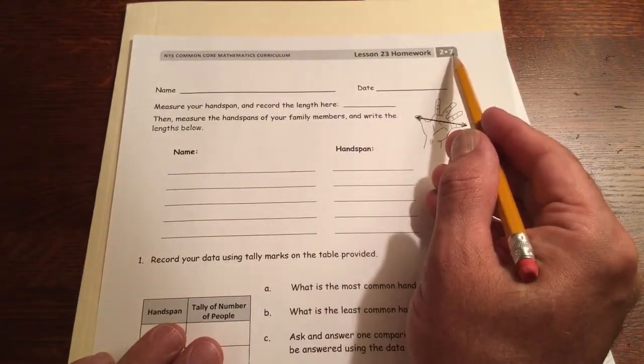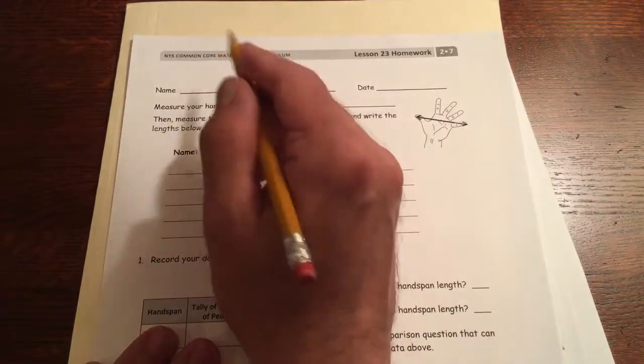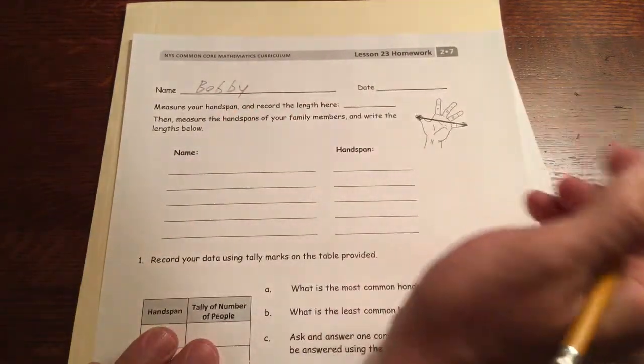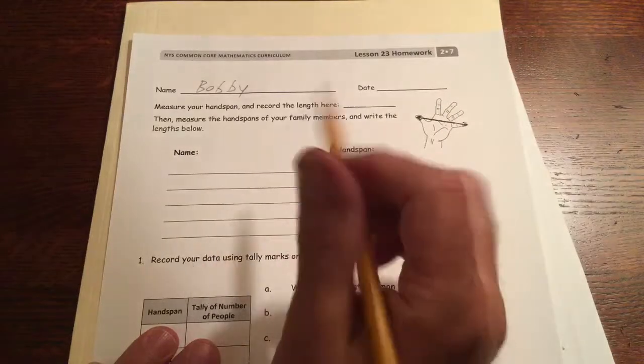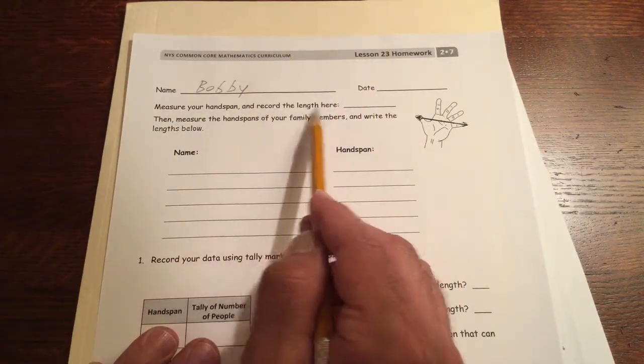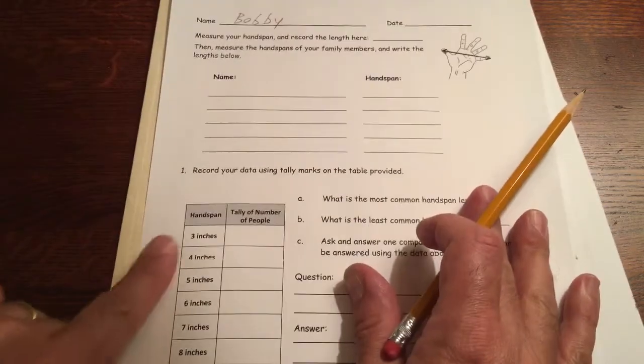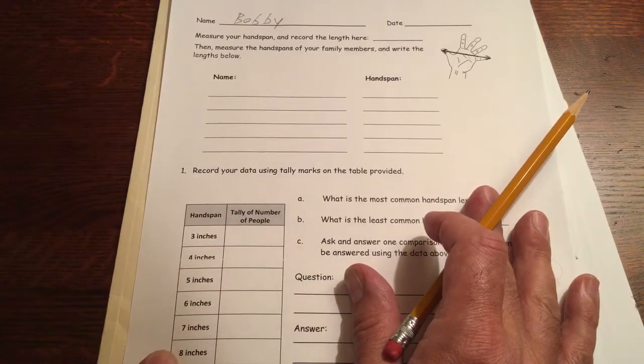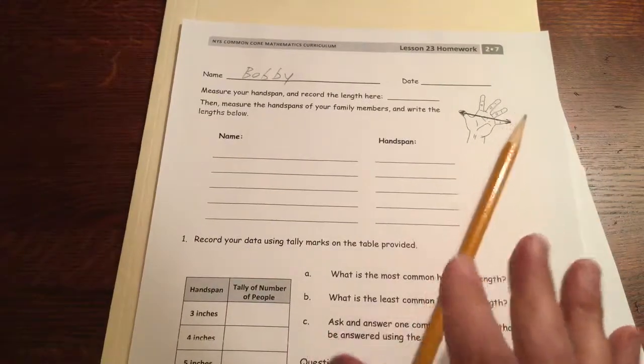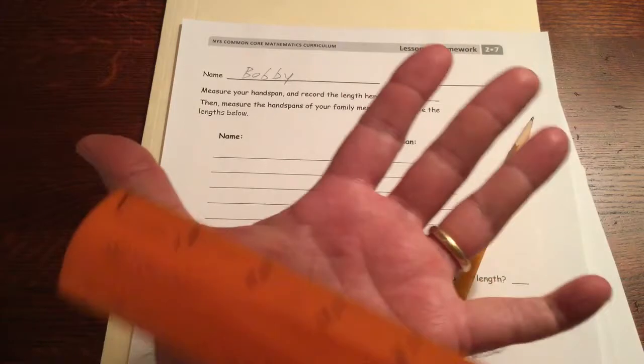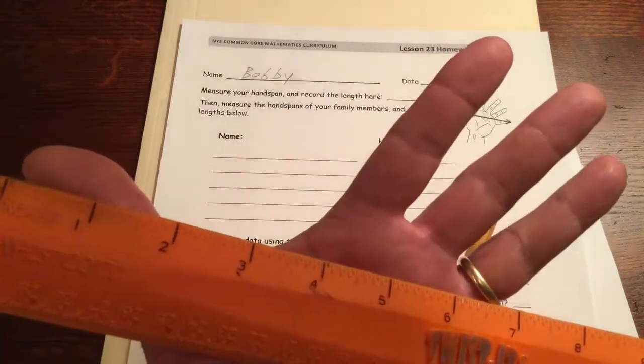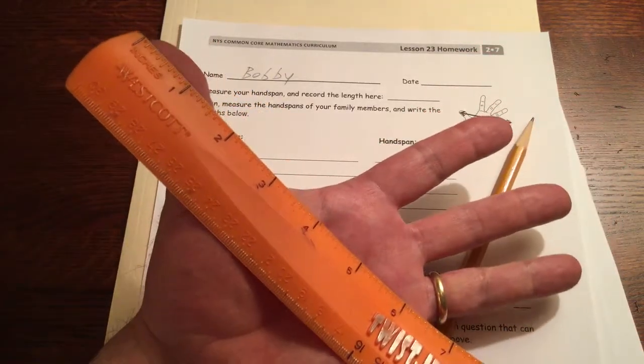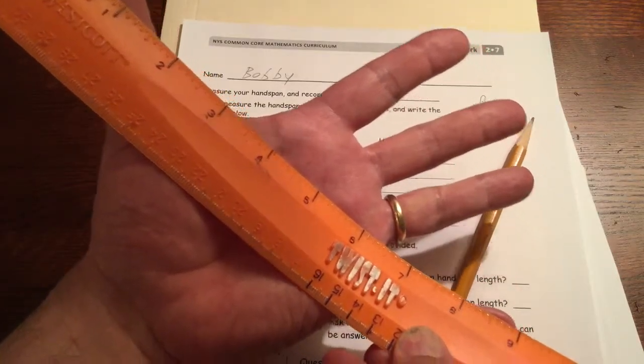This is lesson 23 homework of module 7, second grade. I'm going to write a name. Don't forget to write yours. Do that now so you don't forget later. This says measure your hand span and record the length here. Now we're going to measure these in inches because we're going to use the inches in this table down here. So we're going to use the inches for our ruler and to measure your hand span you see the picture how it shows how to do it from the thumb to the finger. So mine is nine. I'll put my thumb there. You can see about where my pinky ends. Nine.